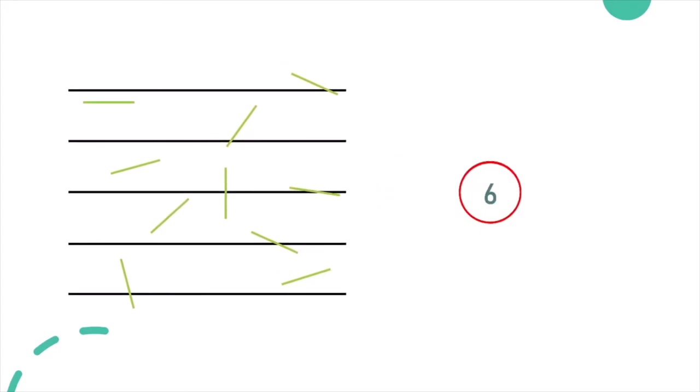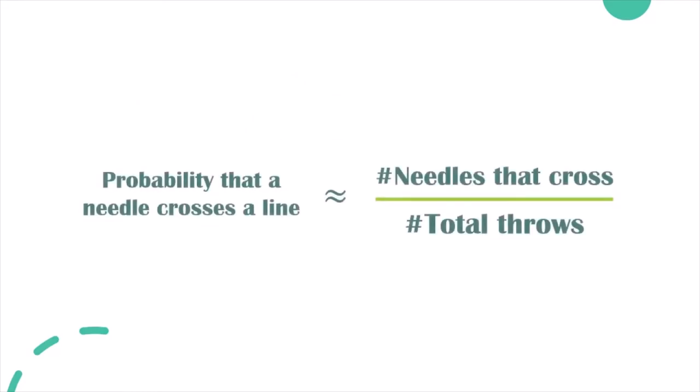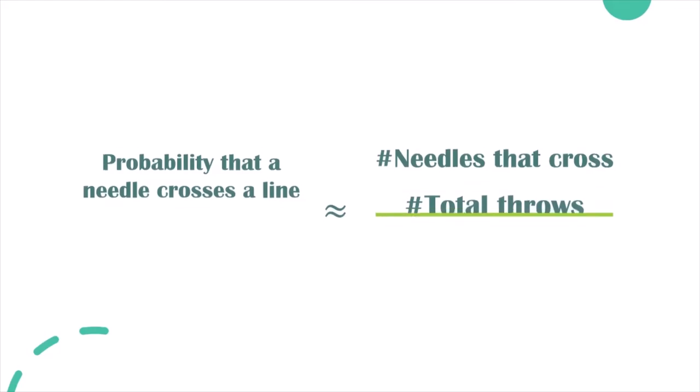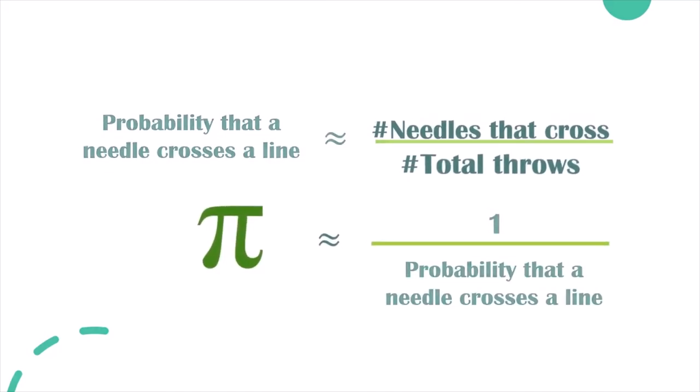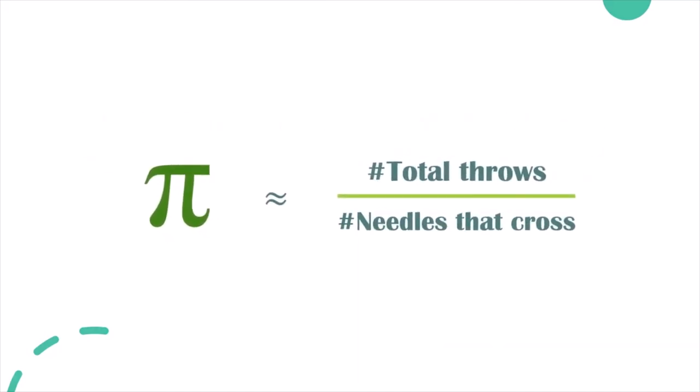Now everything is in place to estimate pi. The probability that a needle crosses a line can roughly be found by taking the number of times a needle crosses a line and dividing by the total number of needles thrown. But pi can be approximated by finding 1 over the probability that a needle crosses a line. And so in other words, pi is approximately the total number of throws divided by the number of needles that cross a line.